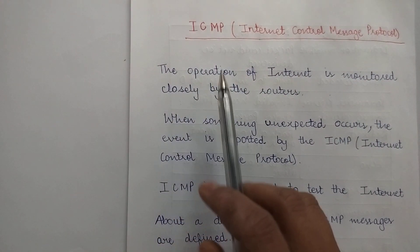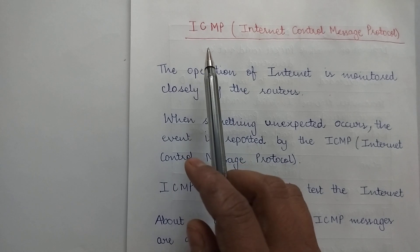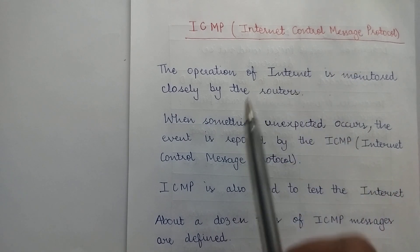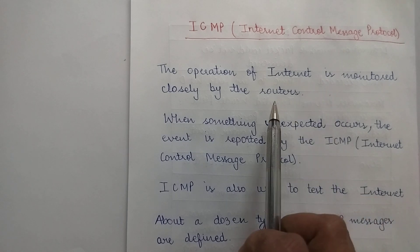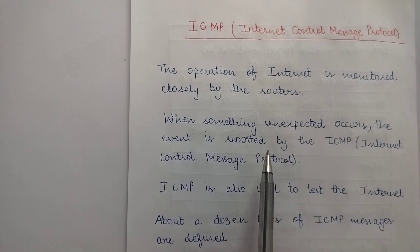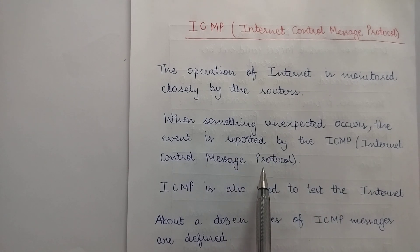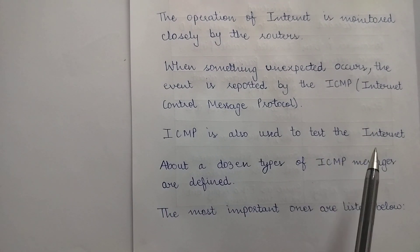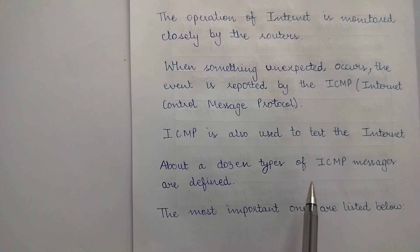Today we are going to study a very important protocol in computer networks — ICMP, also known as the Internet Control Message Protocol. The operation of the internet is monitored closely by routers, but when something unexpected occurs, this event is reported by ICMP. ICMP is also used to continuously test the internet, and about a dozen types of ICMP messages are defined.